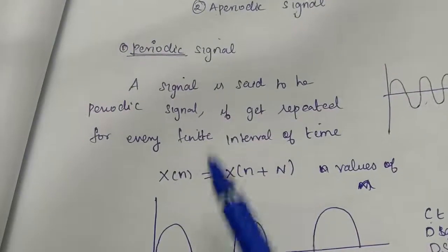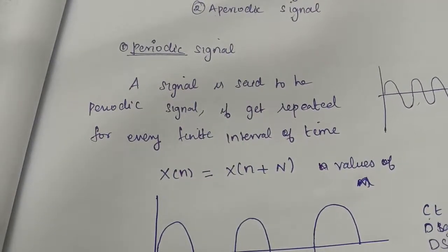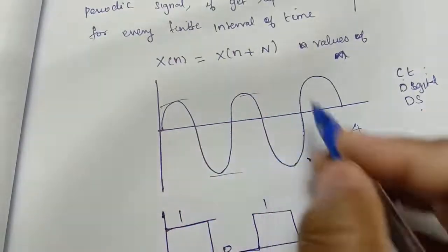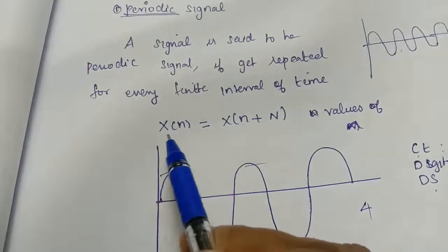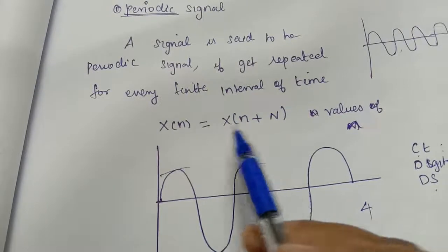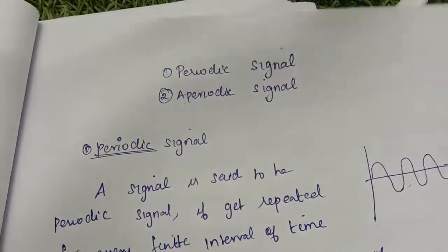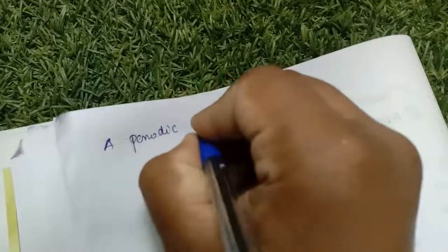Now we continue with periodic signals. A periodic signal is said to be periodic if it gets repeated for every finite interval of time. If you have a waveform with amplitude four, it will keep going with the value four. That is called a periodic signal. The problem must satisfy the equation x(n) = x(n + N) — when it is equal, we call it a periodic signal.